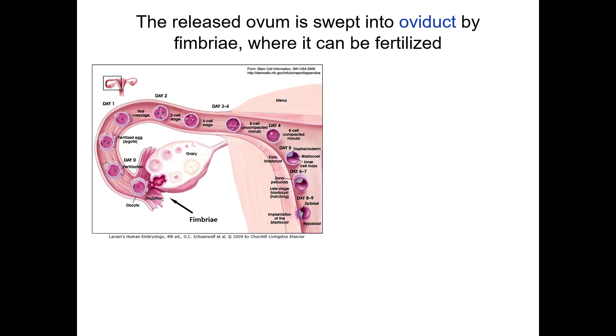The oocyte is now swept by extensions of the oviduct, termed fimbriae, into the oviduct proper, where it can be fertilized.